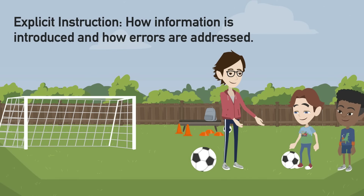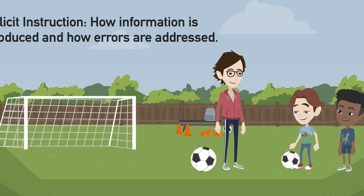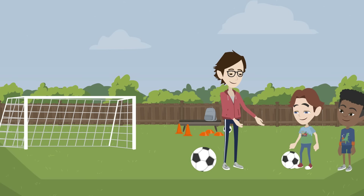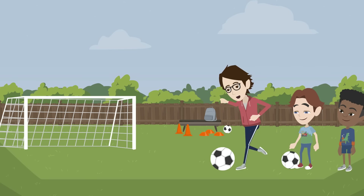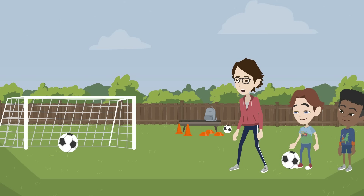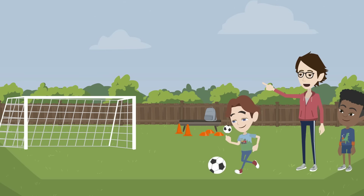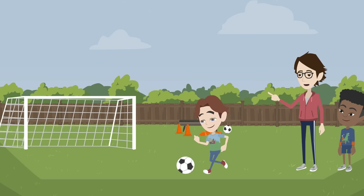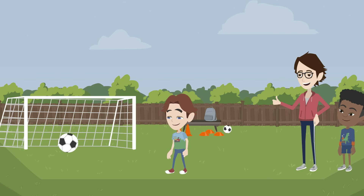The principle of explicit instruction guides how information is introduced and how errors are addressed. One way to conceptualize explicit instruction is to think about a sports coach. The coach explains and demonstrates a skill, such as teaching proper foot placement for kicking a ball. Then the coach guides the athlete in practicing this skill while giving specific feedback. Finally, the athlete will apply that skill in a more complex environment like a scrimmage.